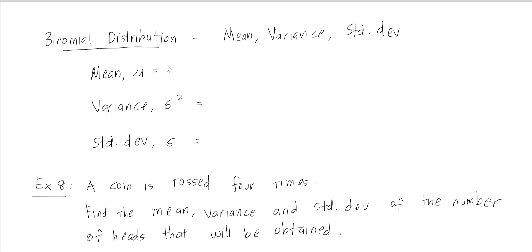To calculate the mean, the formula is mu equals n times p, where n is the number of trials and p is the probability of success. The variance is equal to n times p times q, where q is the probability of failure. The standard deviation is the square root of the variance, or the square root of n times p times q. We know that q is equal to 1 minus p.